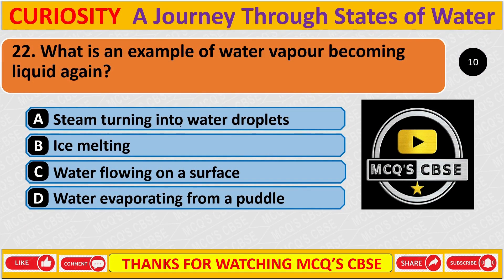What is an example of water vapour becoming liquid again? The correct answer is A: Steam turning into water droplets.